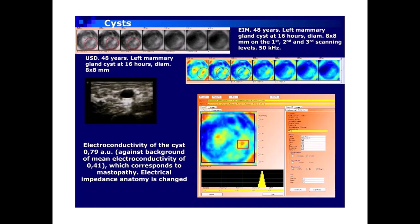Cysts EIM case: 48 years, left mammary gland cyst at 16 hours, Di-AM 88 mm, shown on the 1st, 2nd, and 3rd scanning levels at 50 kHz. Ultrasound: 48 years, left mammary gland cyst at 16 hours, Di-AM 88 mm. Electroconductivity of the cyst: 0.79 AU, against a background of mean electroconductivity of 0.41, which corresponds to mastopathy. Electrical impedance anatomy is changed.